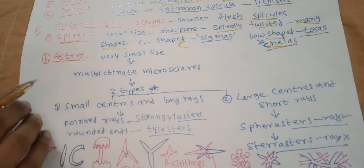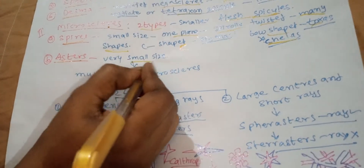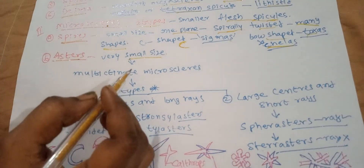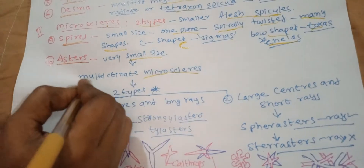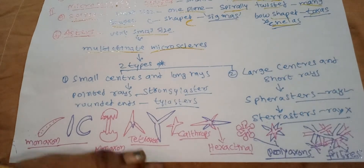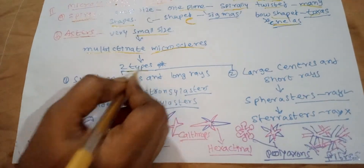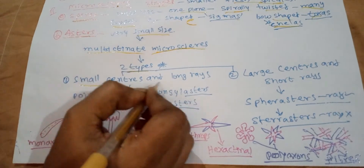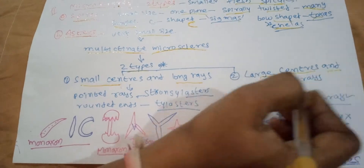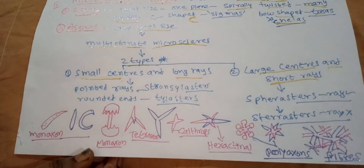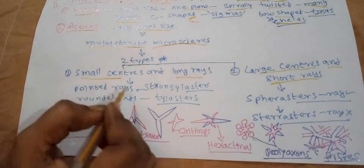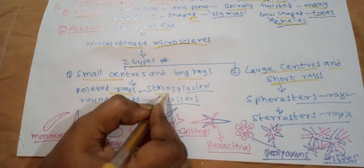Asters are also very small in size. These are multi-actinated microscleres. There are two types: first, those with a small centre and long rays; second, those with a long centre and short rays. Those with a small centre form oxasters with pointed rays.